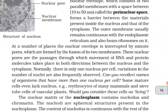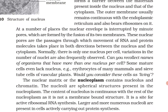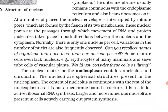The outer membrane usually remains continuous with the endoplasmic reticulum and also bears ribosomes on it. At a number of places the nuclear envelope is interrupted by minute pores formed by the fusion of its two membranes. These nuclear pores are passages through which movement of RNA and protein molecules takes place in both directions between the nucleus and the cytoplasm. Normally there is only one nucleus per cell, though variations in the number of nuclei are also frequently observed.